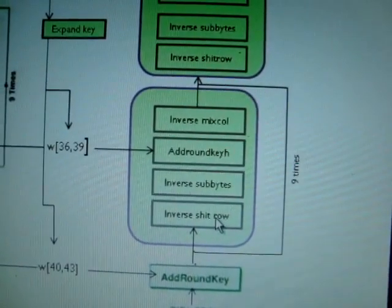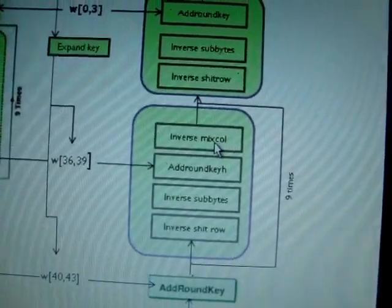Then the last round will be SubBytes, ShiftRows, and AddRoundKey. The result will be a ciphertext.